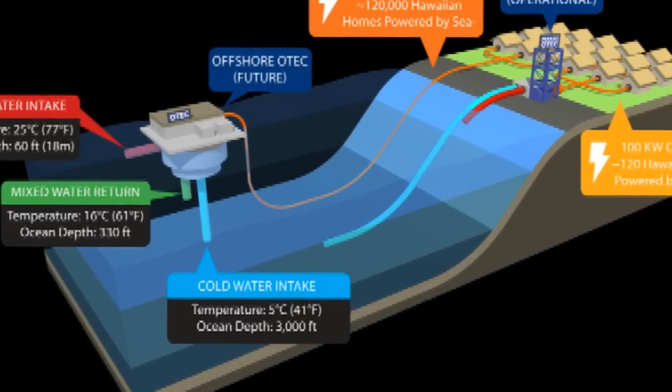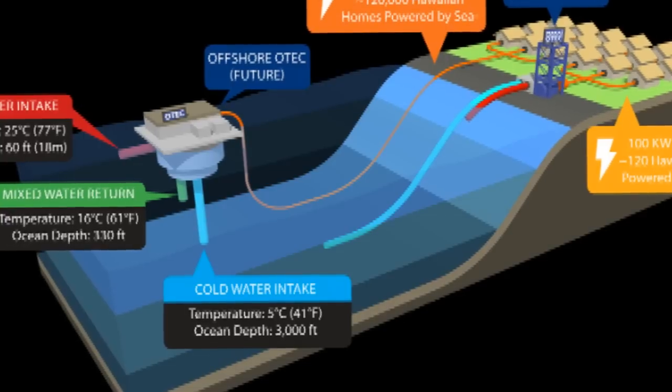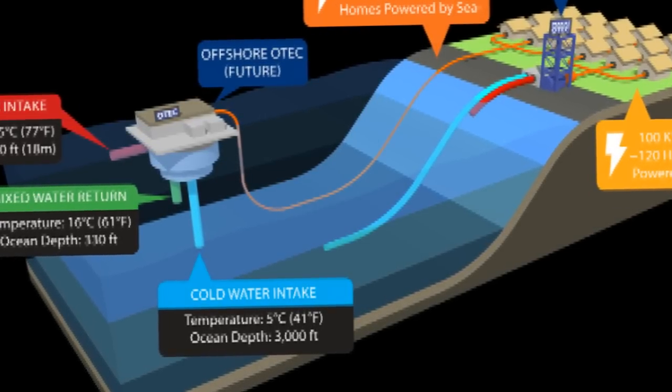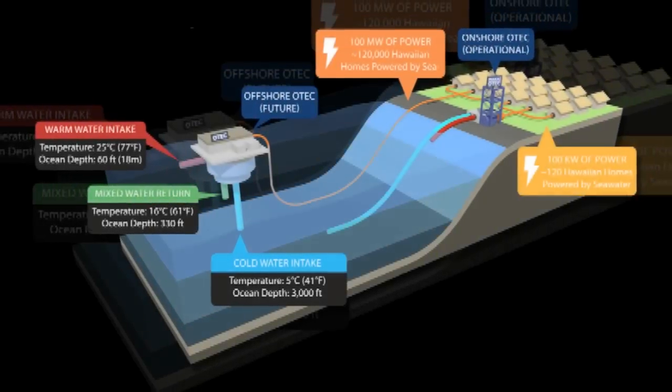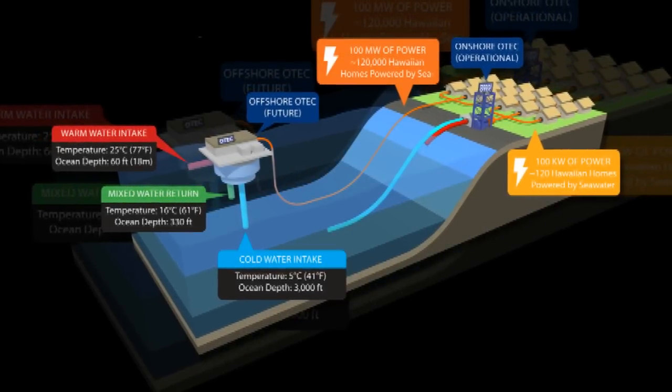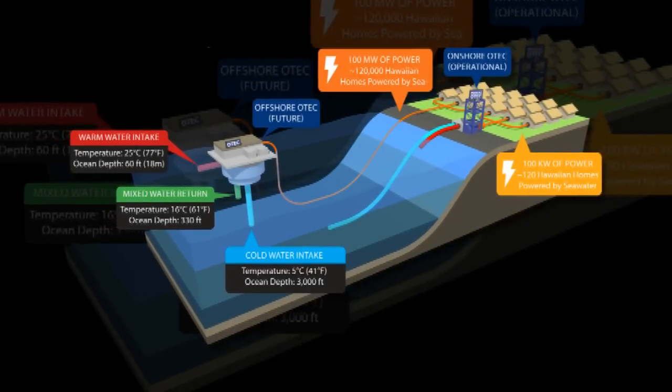The process involves power derived from ocean temperature differences. As Mary Beth Griggs in Popular Science said, between the warm, shallow seawater lapping up against a beach and the icy depths of the ocean.